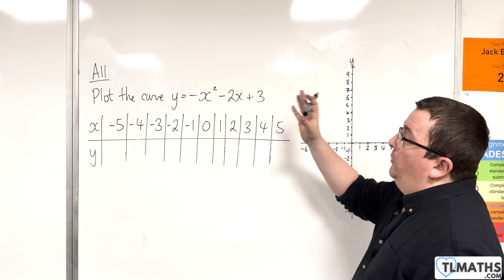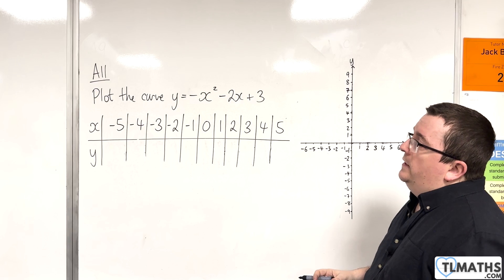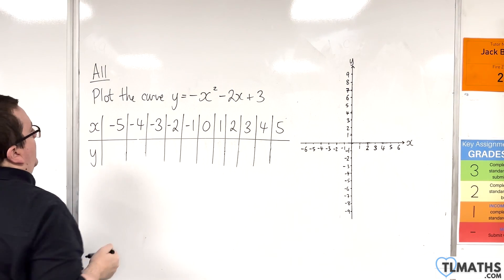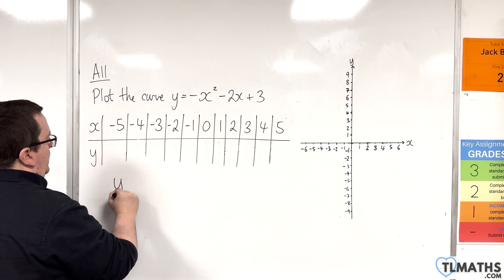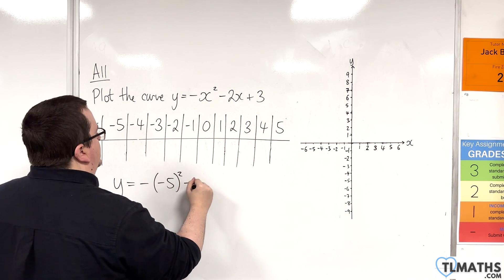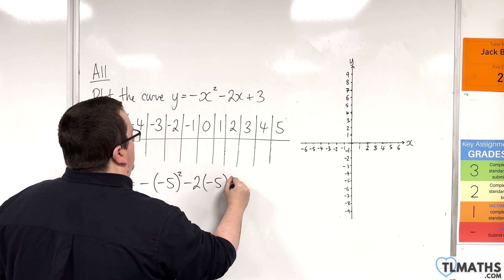So in this video we want to plot y equals minus x squared take away 2x plus 3. So first of all when x is equal to minus 5, y is equal to minus minus 5 squared take away 2 lots of minus 5 plus 3.